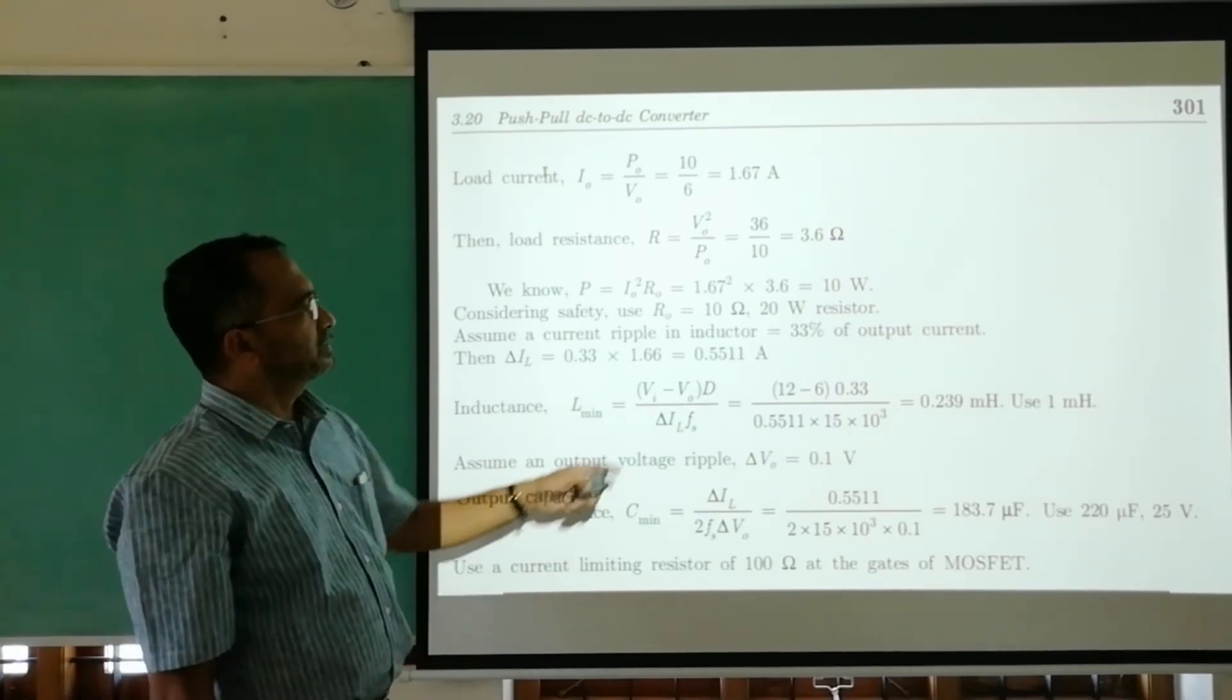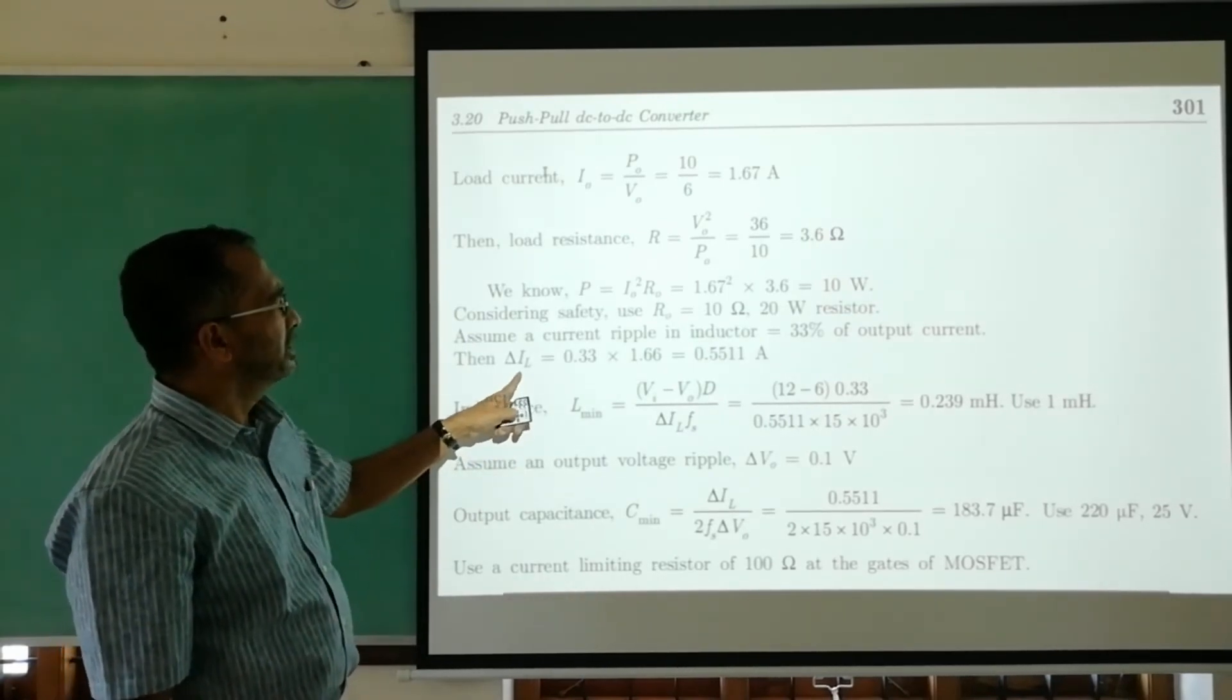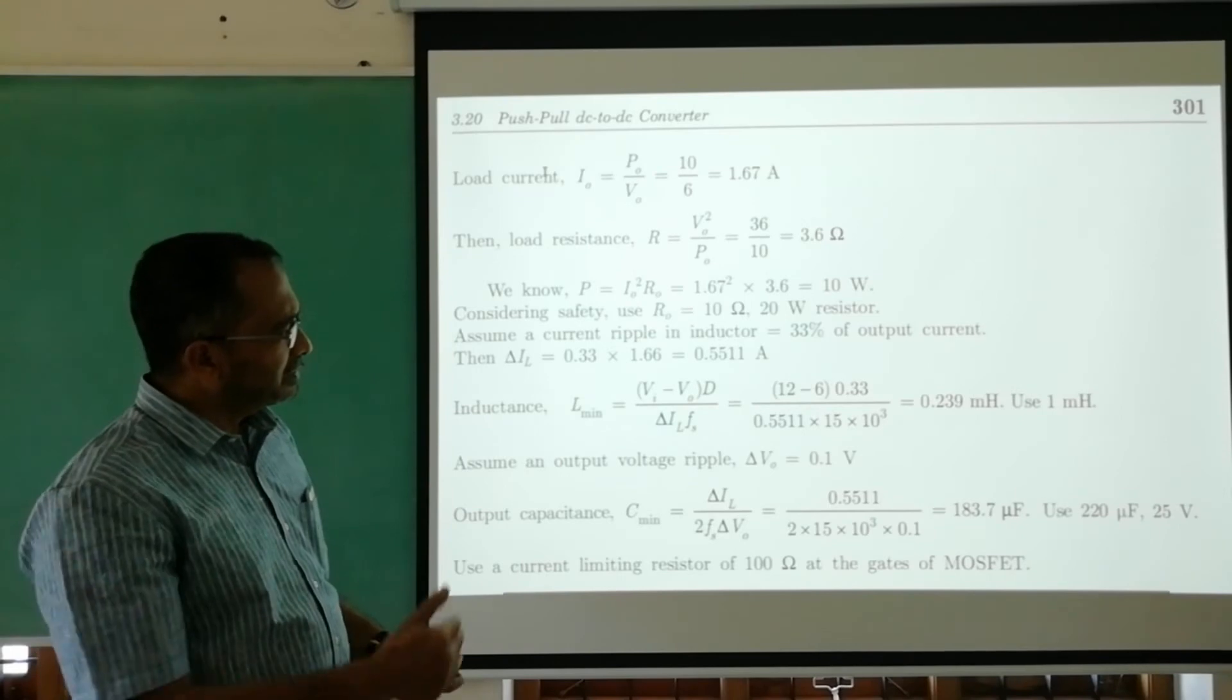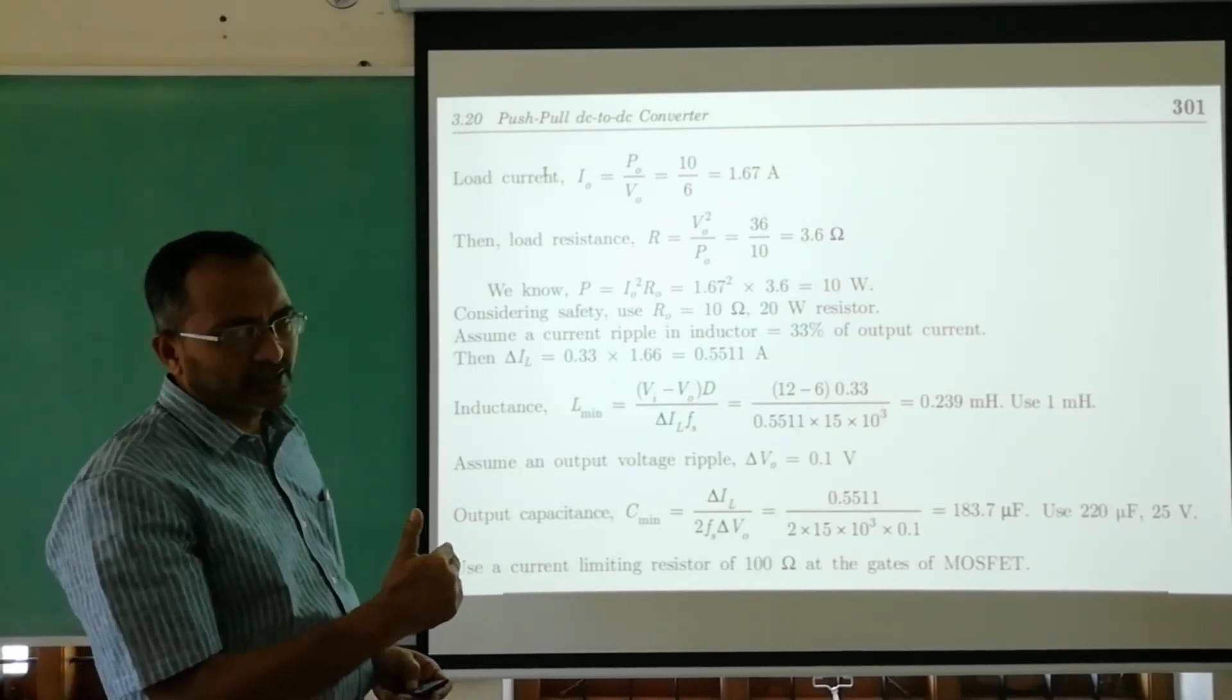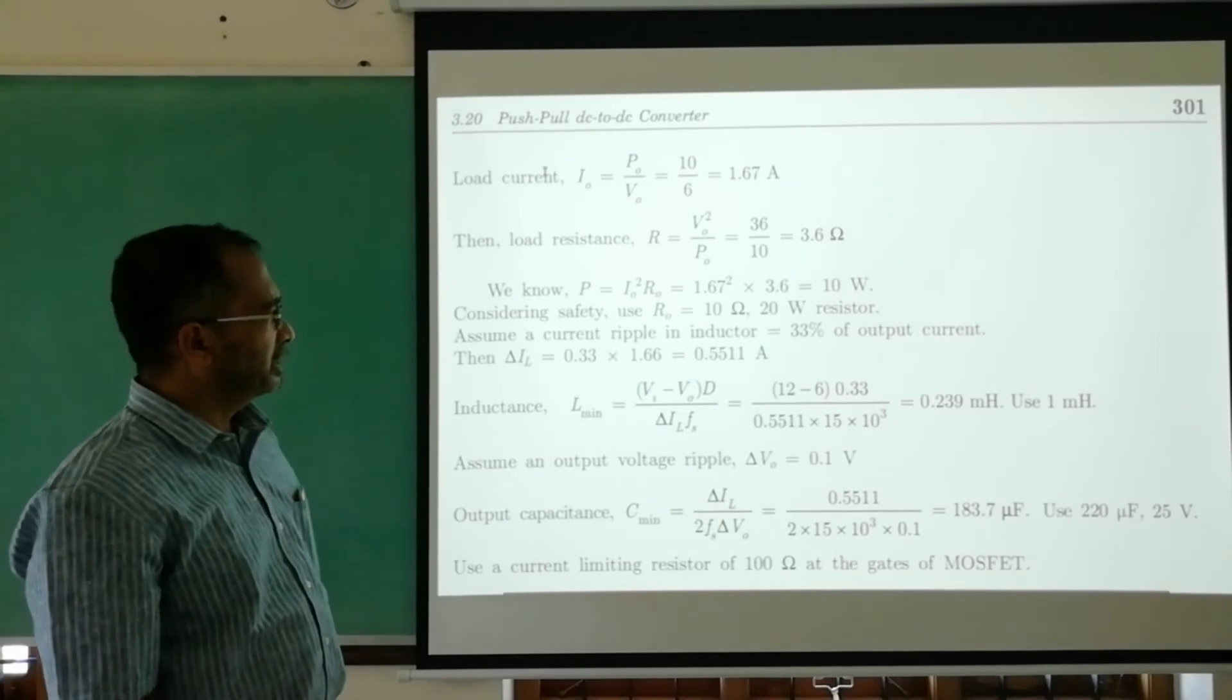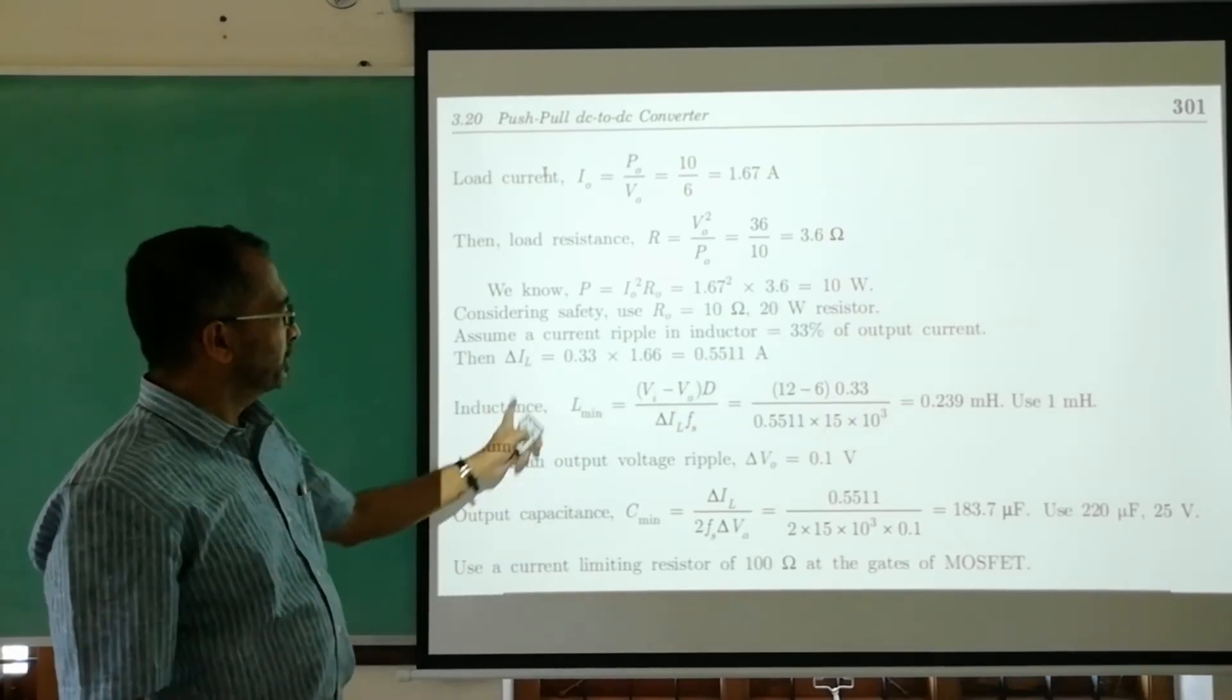For security we can keep a 15 or 20 watt resistor, so we select a 10 ohm, 20 watt resistor at the output as the load. We take the ripple of the current as 30 percent of the output current. The ripple factor is estimated to be higher because practically that happens. We select a higher value for ripple current in the inductor - 33 percent, which comes to about 0.55 amperes.